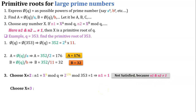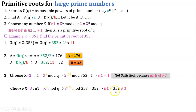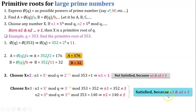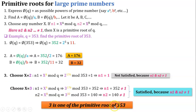Now take x equals 3. For n1: 3 raised to 176 mod 353 equals 352, so n1 is not equal to 1. Now find n2: 3 raised to 32 mod 353 equals 140, so n2 is also not equal to 1. Our condition is satisfied because n1 and n2 are both not equal to 1. Therefore, 3 is one of the primitive roots of 353.